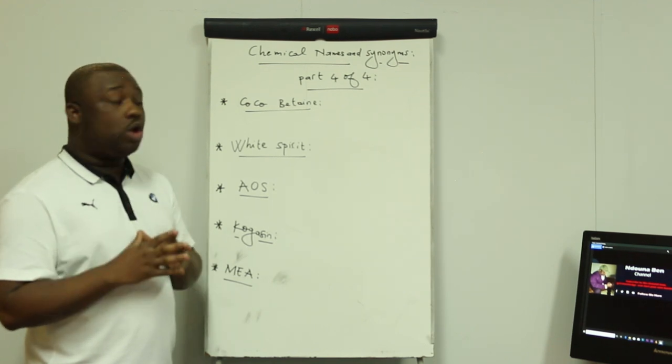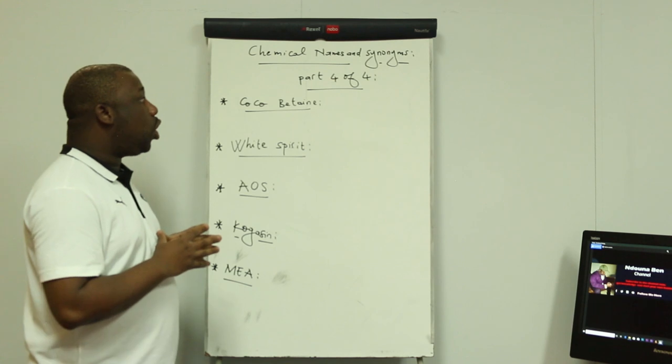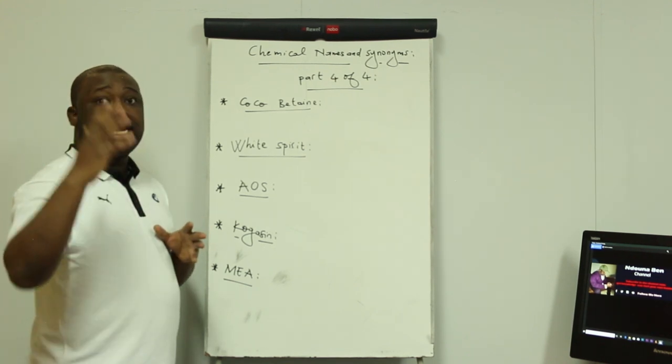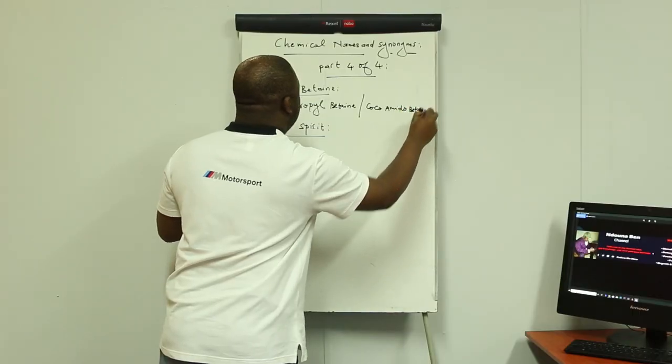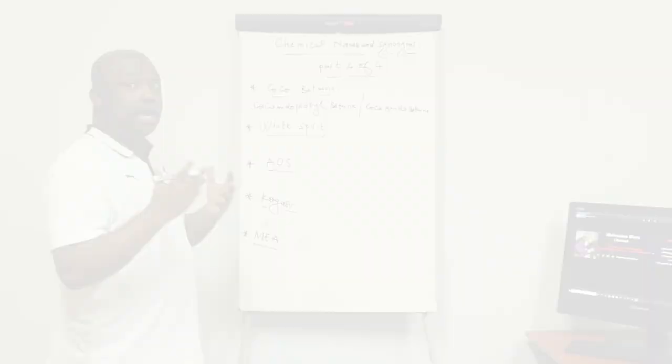Here we go. The first chemical on the board is coco betaine. What are other names of coco betaine? Other names of coco betaine are cocoamidopropyl betaine or cocoamidopropyl betaine.